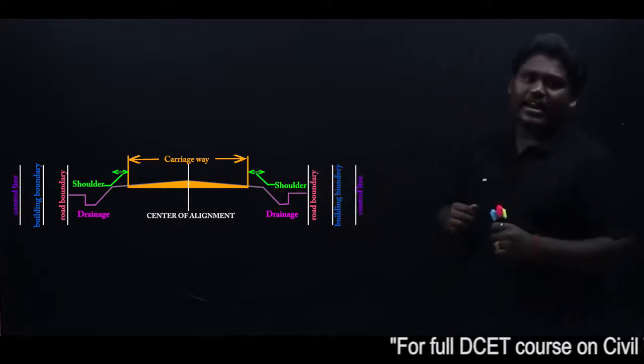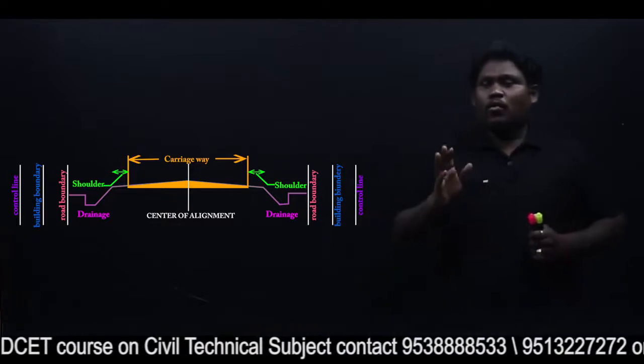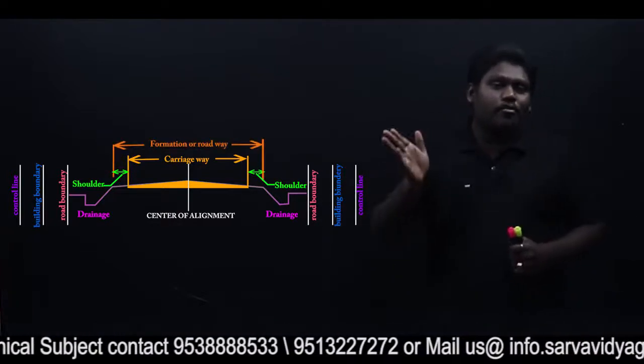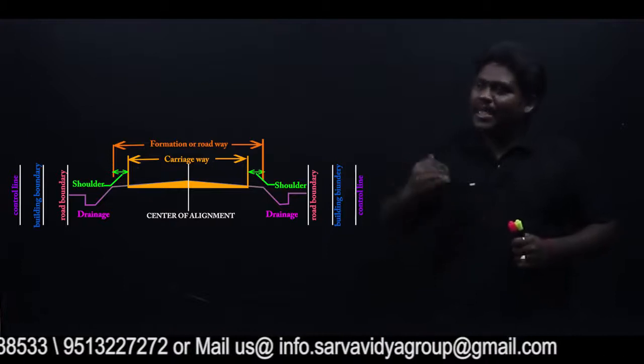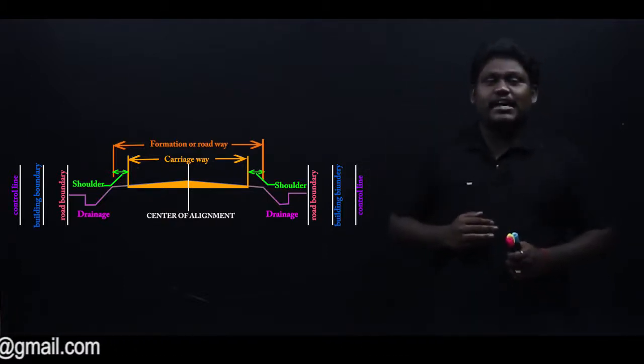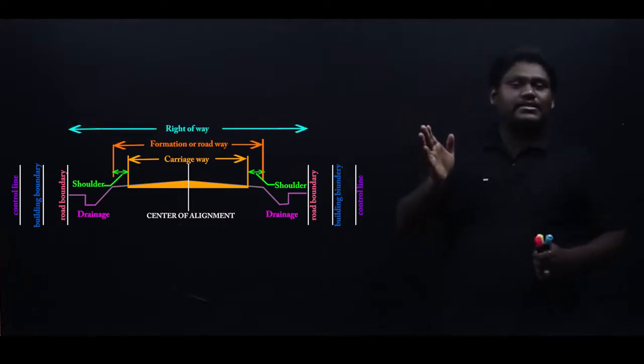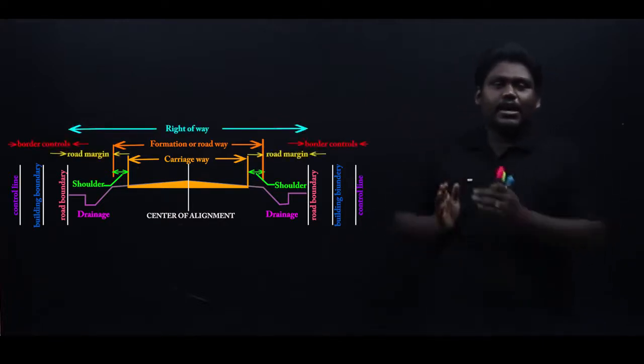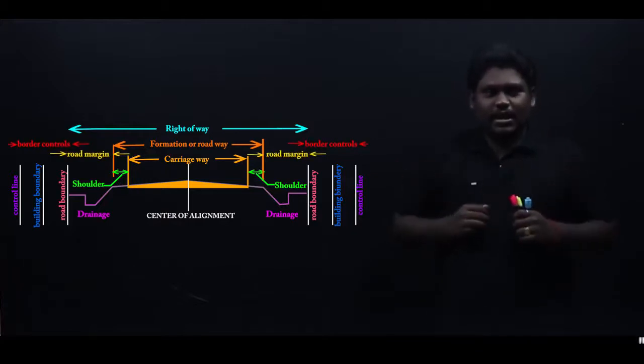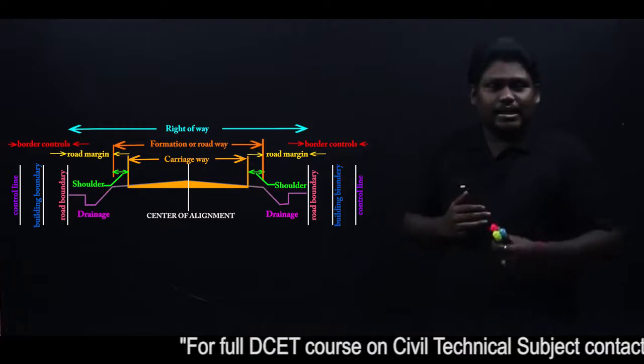There are some other elements you can see: one is called the formation or roadway, the second is the right of way, and the last one is the distance between control points. Now let us look into each parameter, their definitions and specifications.